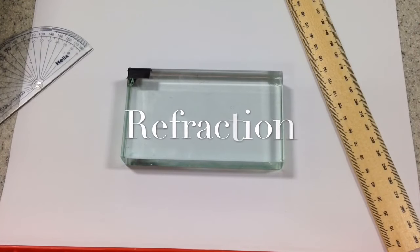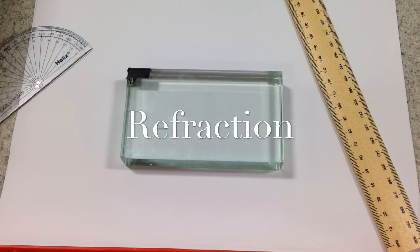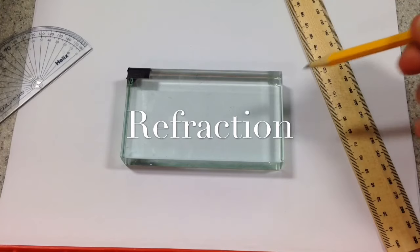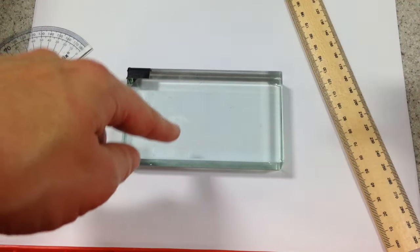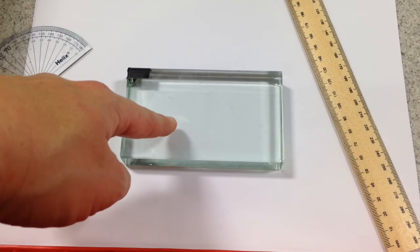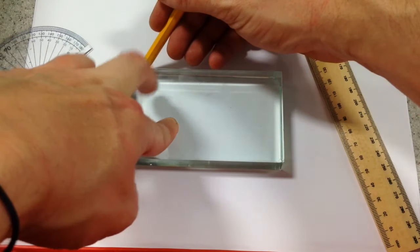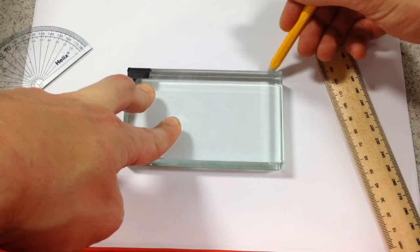Okay people, drawing ray diagrams to show the refraction of light through a glass or perspex block. Step one, we are going to put the glass or perspex block down flat on our page and we are going to draw around it.